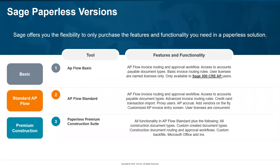Standard AP Flow adds credit card imports, you can have proxy users, you can accrue AP invoices that haven't been approved yet, add vendors on the fly, and do some customizations to the display. The Premium Construction Suite allows you to manage all types of documents — not just AP documents — where any type of document can have routing and approval workflows attached. You can create your own custom documents and custom backfills, as well as plugins between Microsoft Office products.